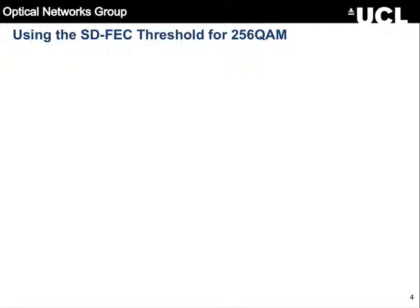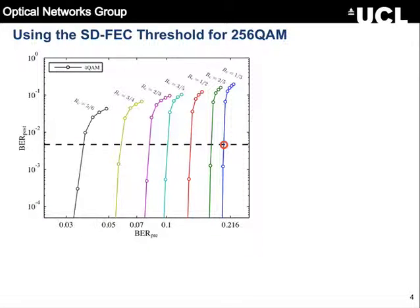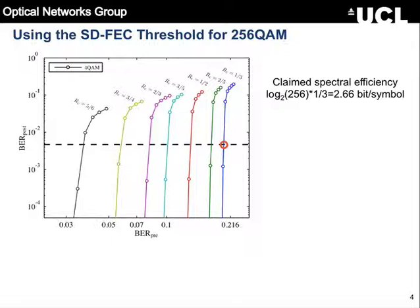Here's an example: simulated turbo codes for QPSK and different code rates — this is very high overhead, this is low overhead — and say you want to guarantee a certain post-FEC BR. You measure your pre-FEC BR and say this code with this overhead will give me that post-FEC BR. You did this for QPSK, and then you want to say something about 256QAM because you've got a new setup in your lab and want to use a different modulation format. Using this paradigm, you measure this value for 256QAM in the lab, so you claim you can use this code to guarantee this post-FEC BR.